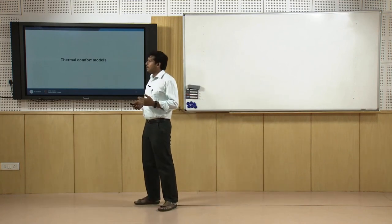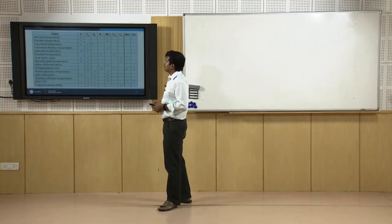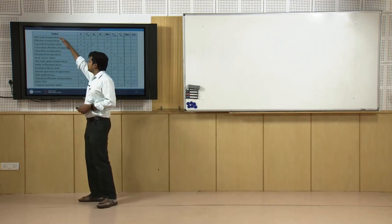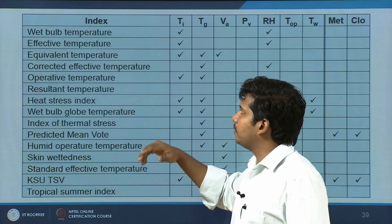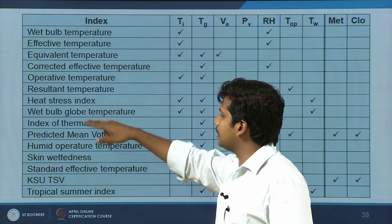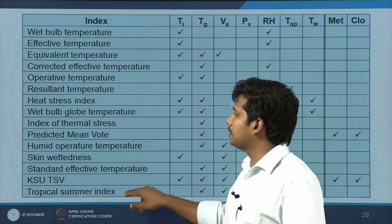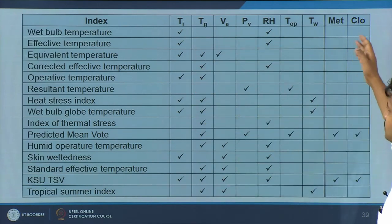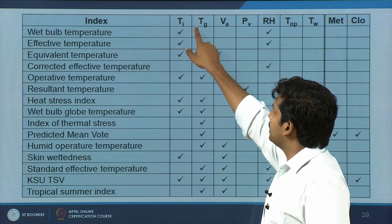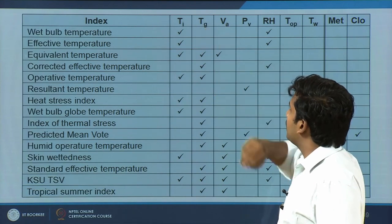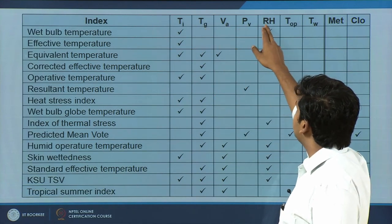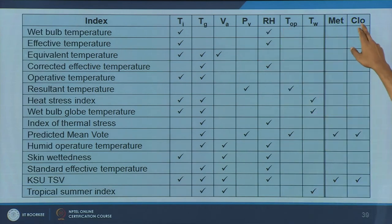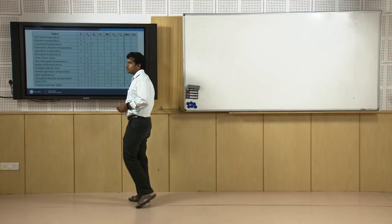Let us quickly look at two or three comfort models. A list of comfort models includes wet bulb temperature, Tropical Summer Index developed in India, and others. The parameters involved include Ti (dry bulb temperature), globe temperature, air velocity, vapor pressure, relative humidity, operative temperature, metabolic activity, and clothing insulation.